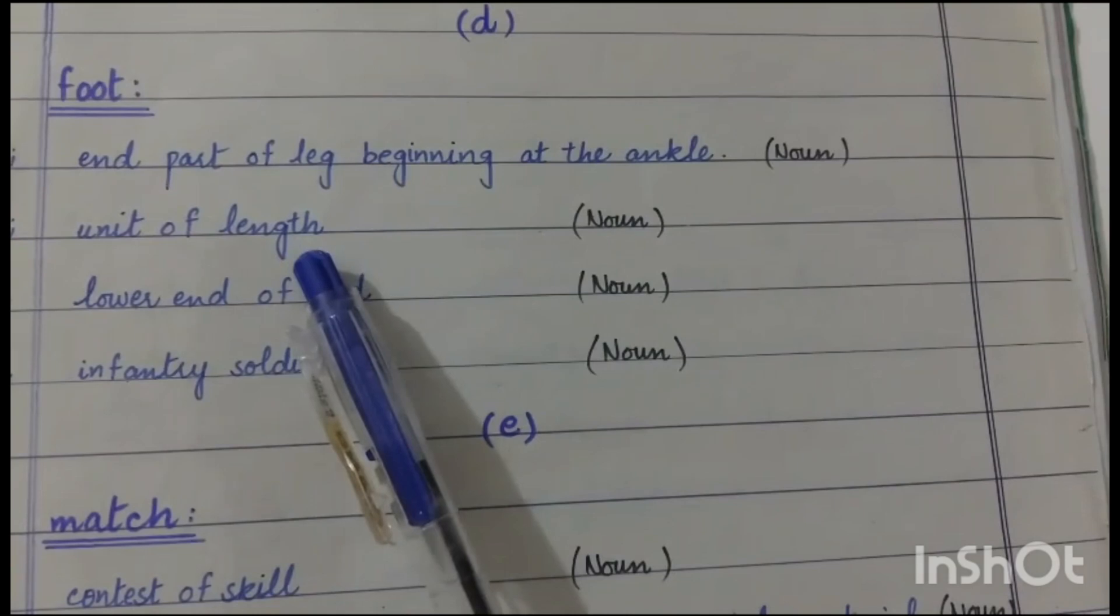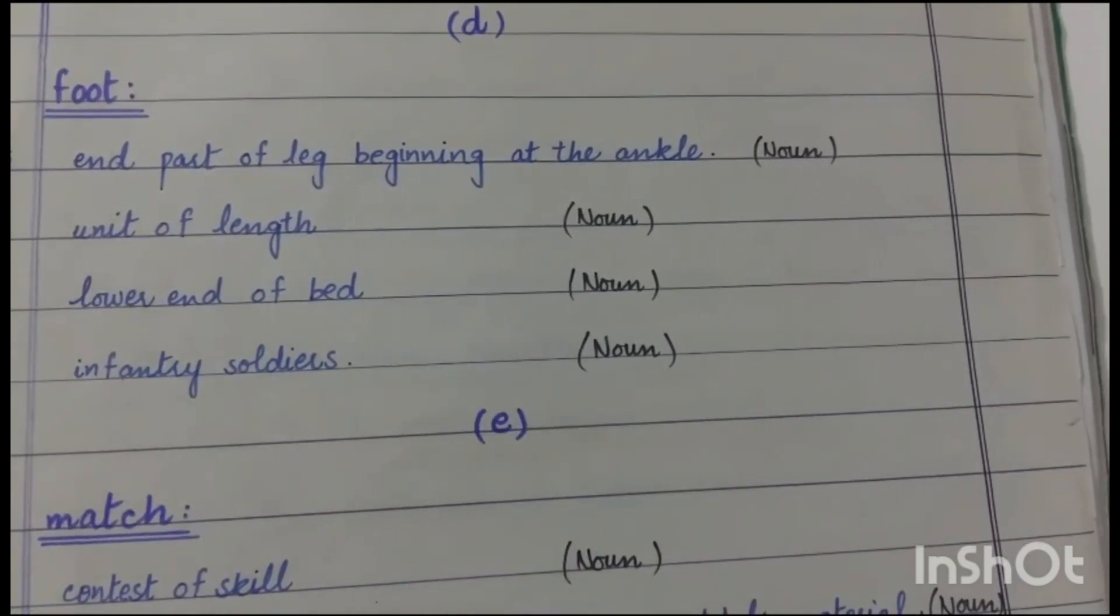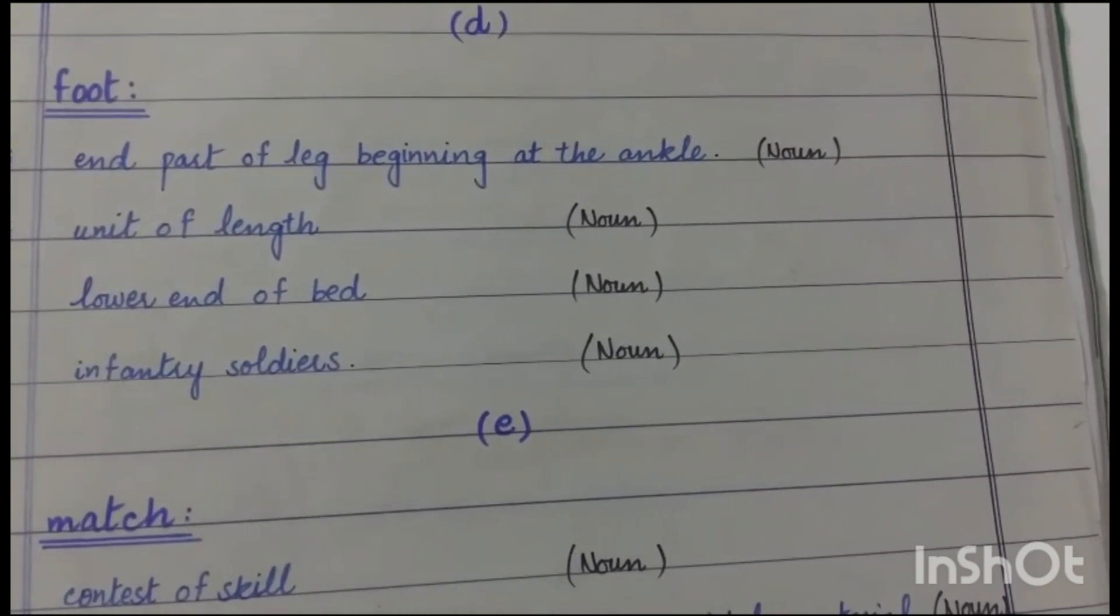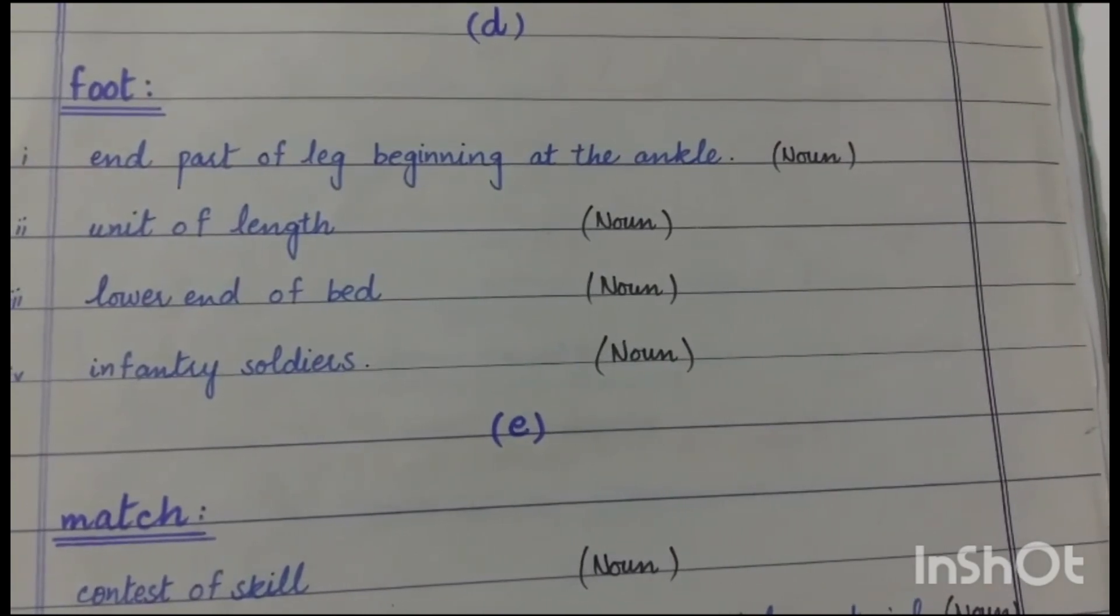Our next word is foot. Foot as a noun means end part of leg beginning at the ankle. It is also the unit of length, the lower end of the bed, and infantry soldiers. Infantry soldiers are the soldiers that march or fight on foot.